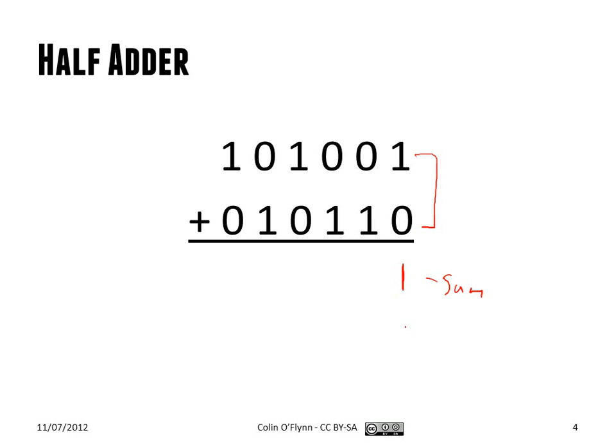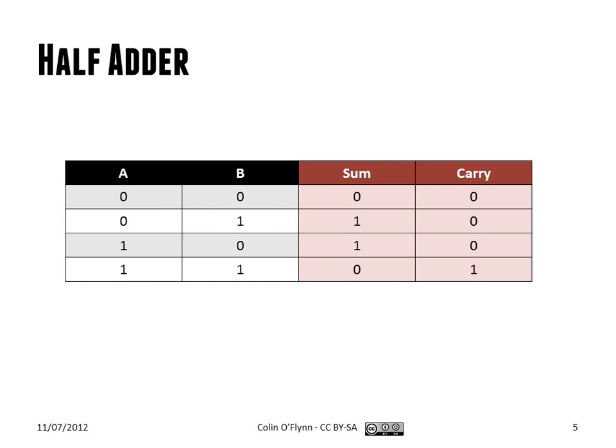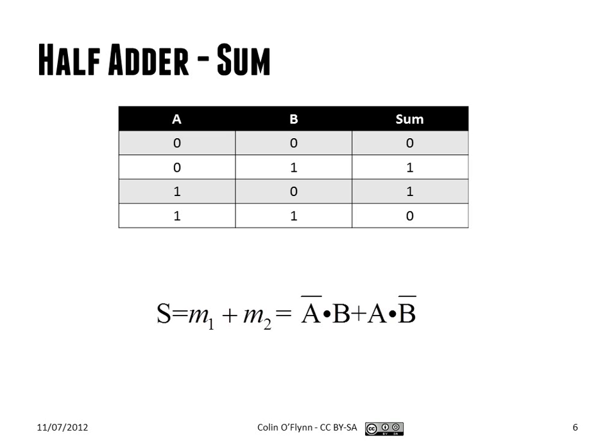So here we have a sum of one, carry of zero. That's the truth table for a half adder, and from that we can use the synthesis processes we've been discussing — in this case sum of products.